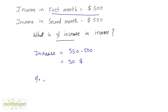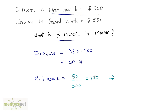The percentage increase equals the increase — which is 50 — divided by the old value, which is 500 (the first month's income), times 100. So: increase upon 500 times 100 gives you the percentage increase. Cancelling terms, the percentage increase is 10%.